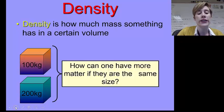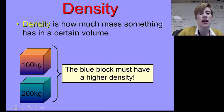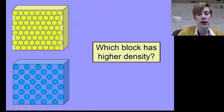How can one object have more matter if they're the same size? Obviously, the blue block has twice the amount of matter or mass that the first block has. So how is that possible if they're the same size? Well, the blue block must have a higher density because it must have more matter packed into the same amount of volume.